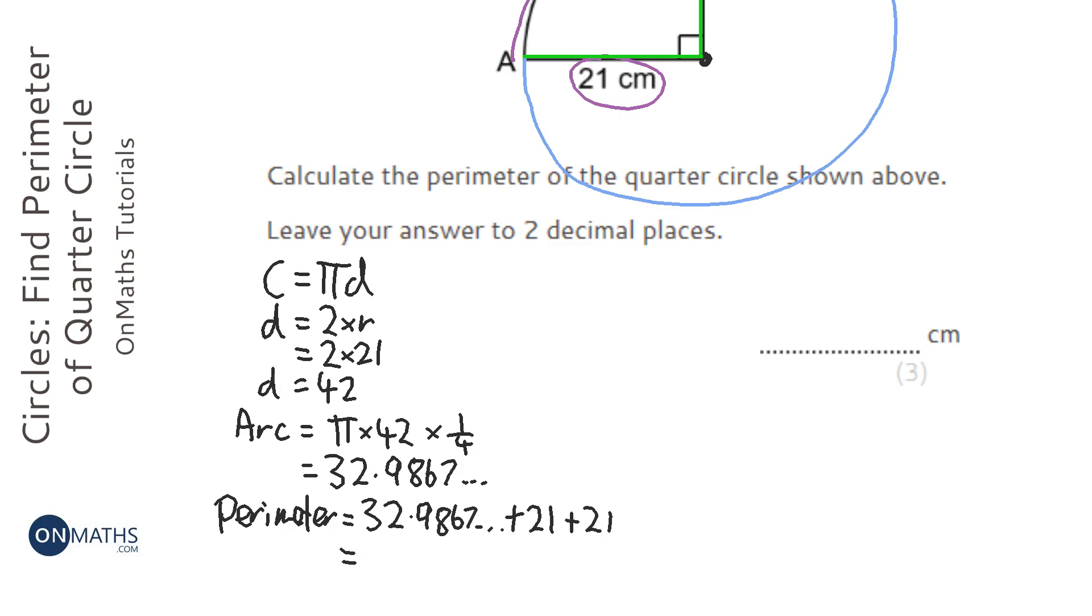So, I'm going to add 21 and then add 21 again, and that equals 74.9867 and so on. So, to two decimal places, that's going to be 74.99.